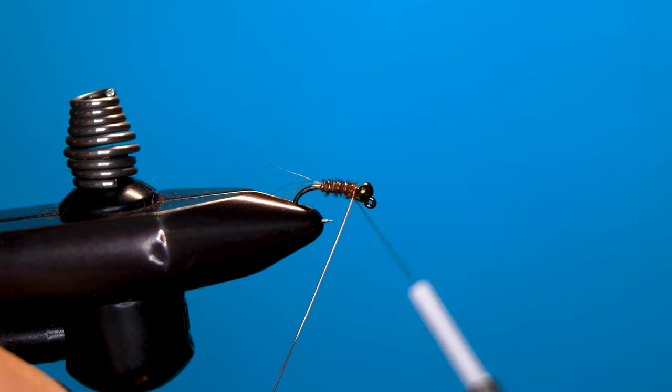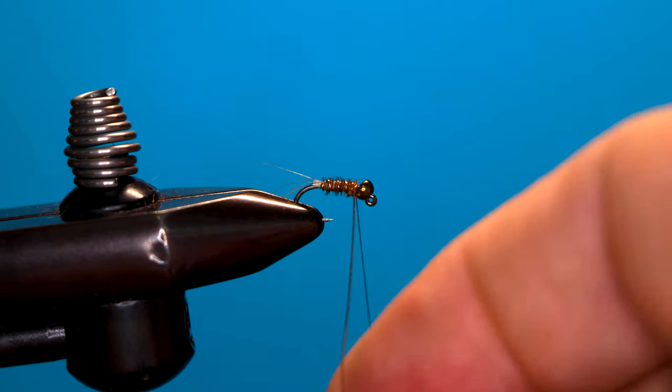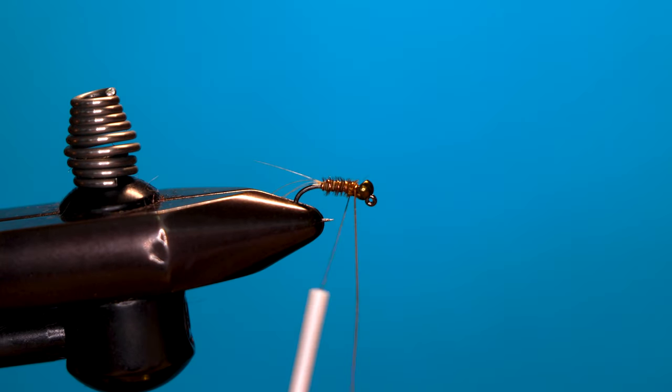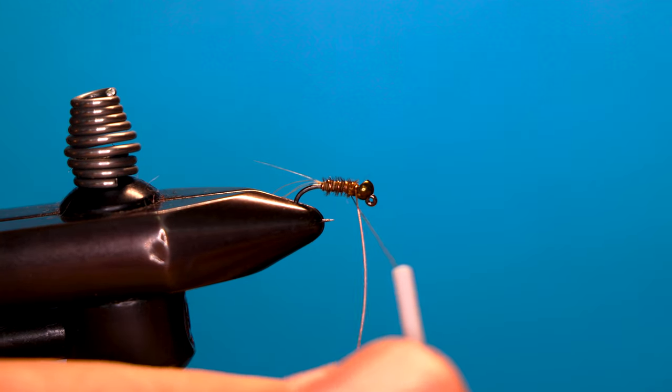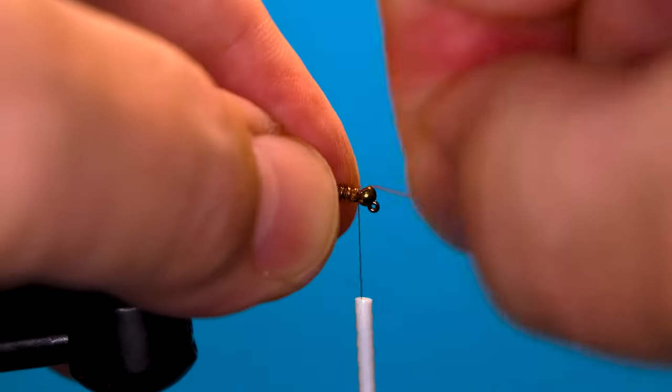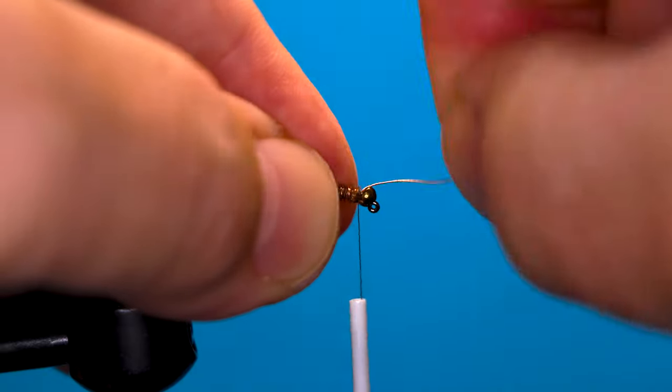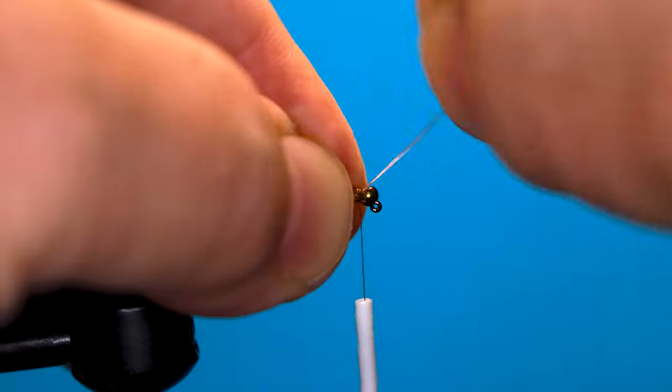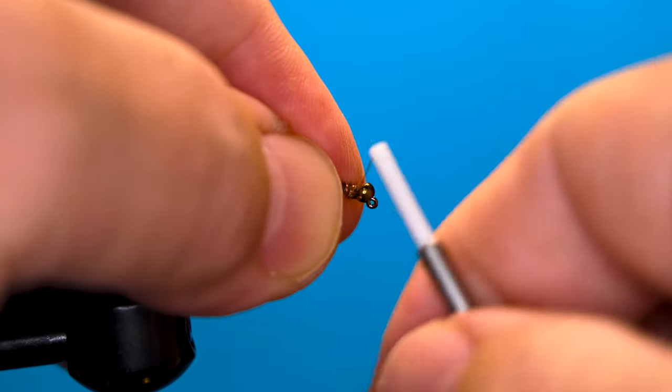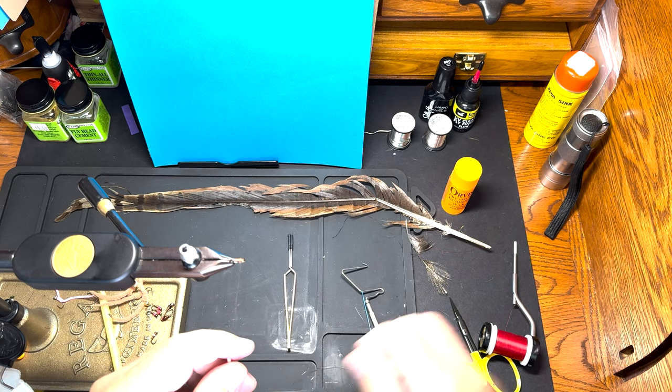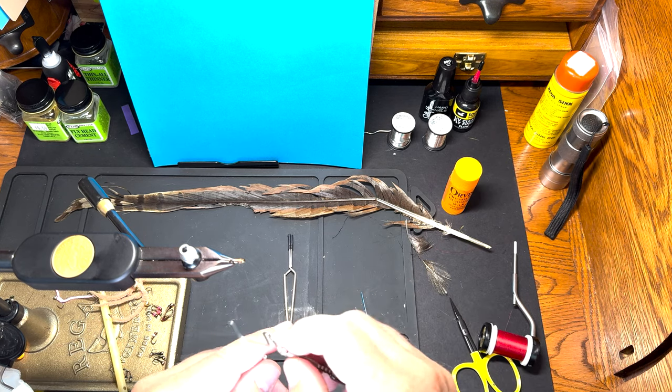We're going to go a couple wraps in the front and a couple good wraps in the back, and we can just draw all that till it snaps. Just tighten everything up. At this point, I'm going to put in a whip finish.